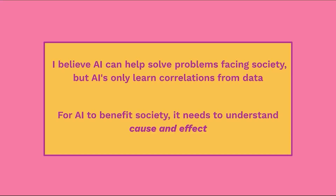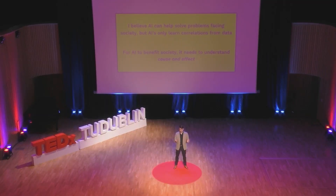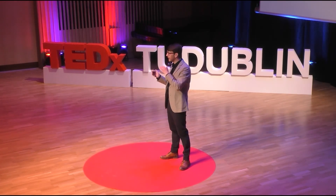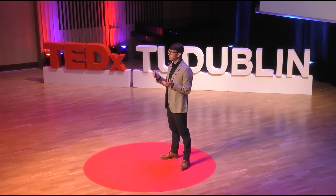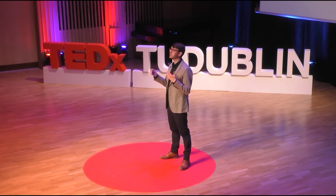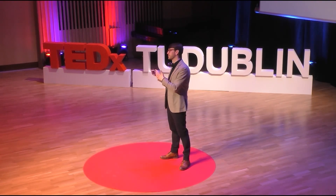I really believe that AI can help solve problems facing society, but for AI to benefit society it needs to understand cause and effect. So how do we go about learning cause and effect? Let's look back at our vaccine example. The bias in the association between getting the vaccine and higher mortality wasn't just due to the vaccine — it was also due to age.